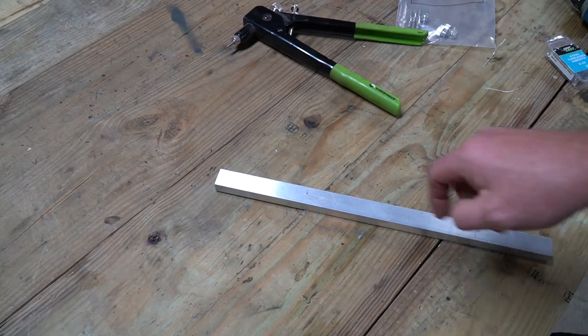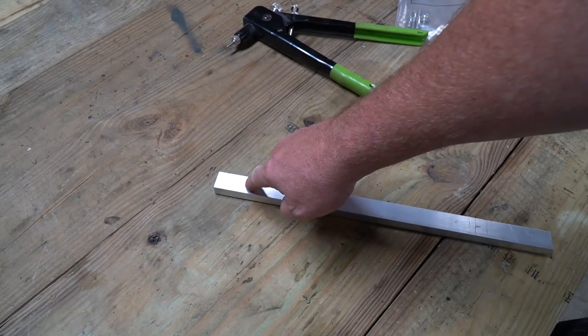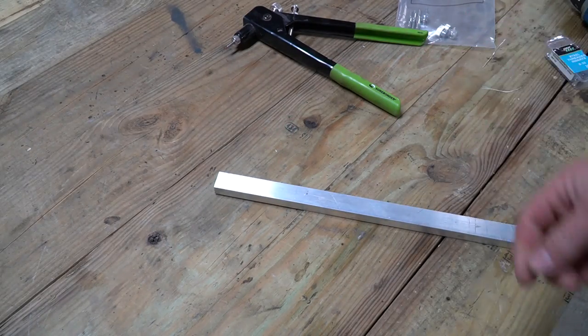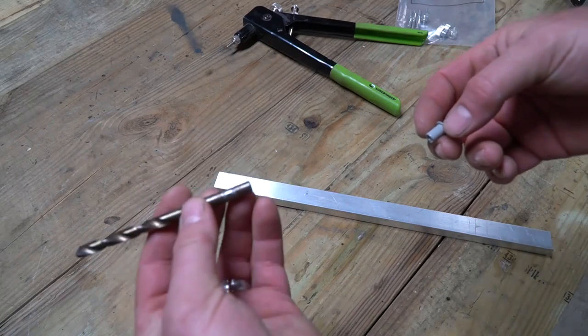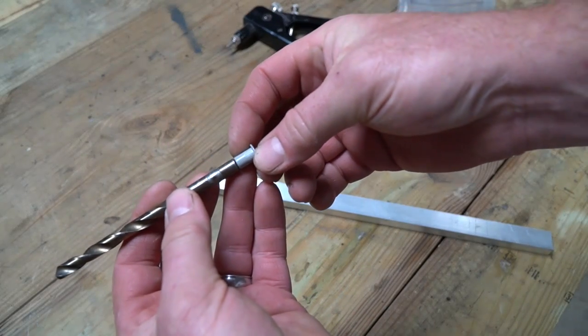Now it should go without saying you're going to need a hole in whatever you're putting the rivet into so you're going to probably drill that, and sizing that is also pretty simple. You just want to find a drill bit that is just a smidget bigger than the rivet itself.